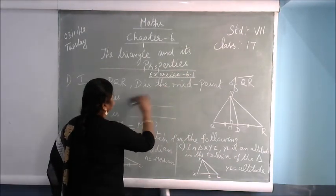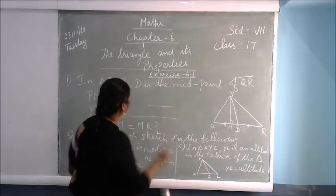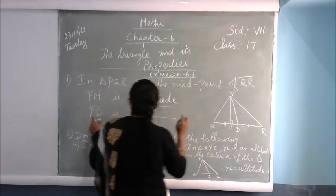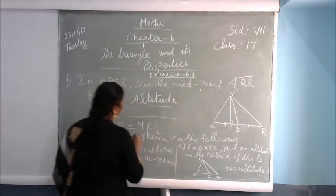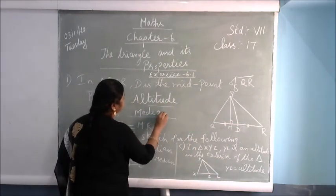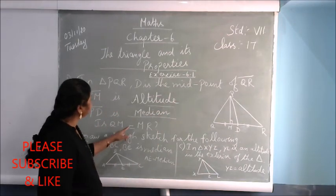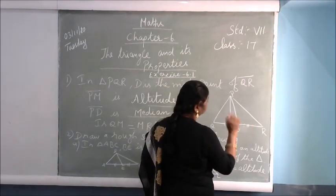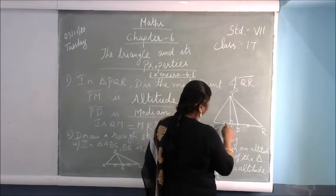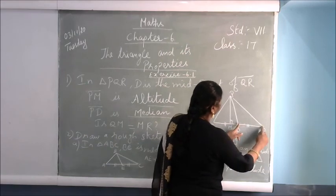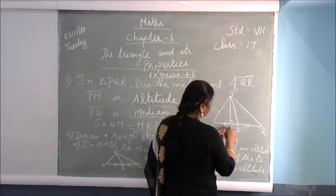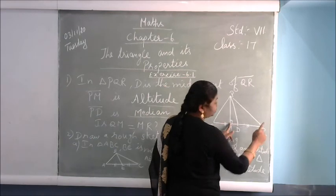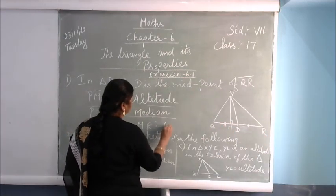PM is your median. For the third question: is QM equal to MR? QM is three centimetres on this side, but if M is coming in between Q and D, then these two length segments won't be equal. So the answer is No.